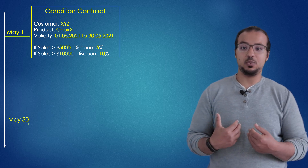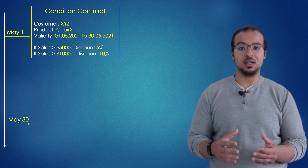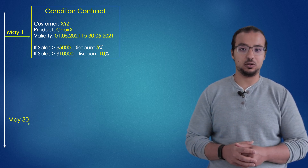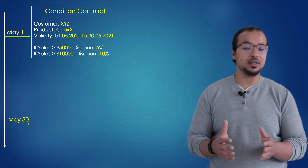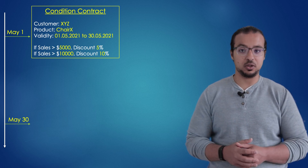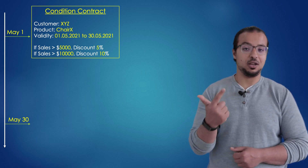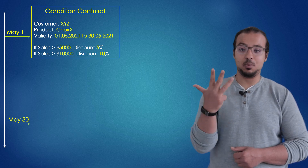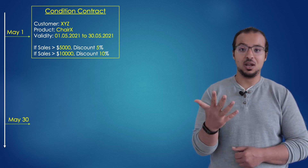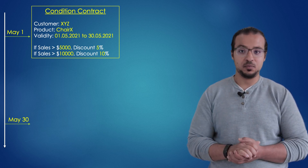In my example, I will start the process by creating a condition contract. The contract will include all the details I just mentioned: the product impacted, the customer impacted, the validity period, the rebate percentage, and the target sales to be achieved.